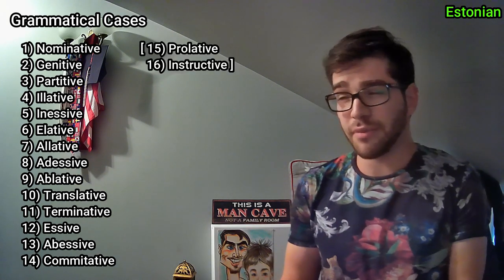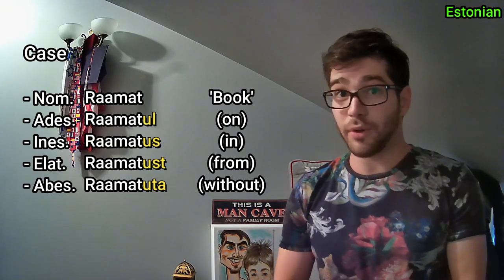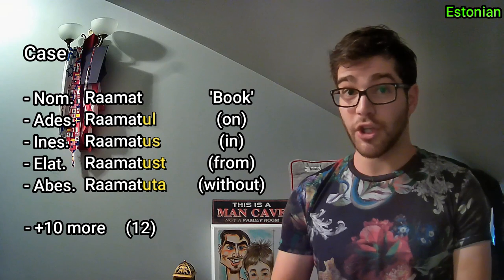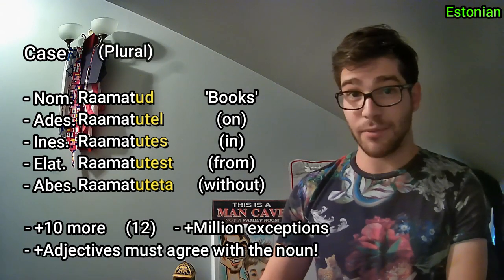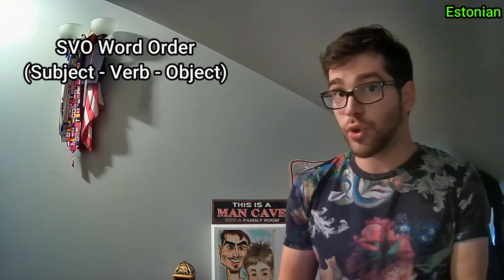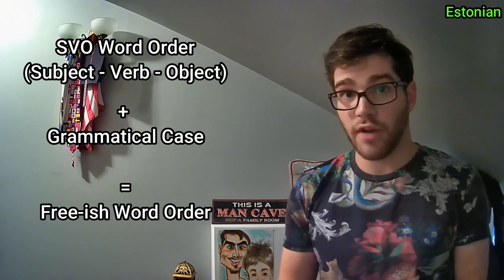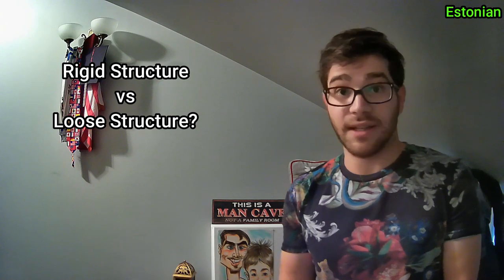The reason Estonian is considered to be so difficult is because of its 14 grammatical cases — technically 16 if you include prolative and instructive, but those are quite rare. So depending if you're on a book, in a book, from a book, or without a book, the book is going to have a different ending — and there are 12 more of those. It's also going to be different if there's more than one book, adjectives have to agree with that as well, and there are a million exceptions. This does mean that the basic SVO word order may sometimes be ignored, because thanks to grammatical case, the words may be arranged however, and you won't lose any meaning. Not sure if that makes the language easier or more difficult — rigid structure vs. loose structure — but it definitely makes the language much more fluid.